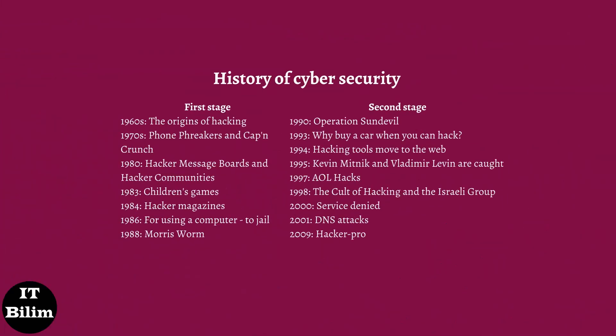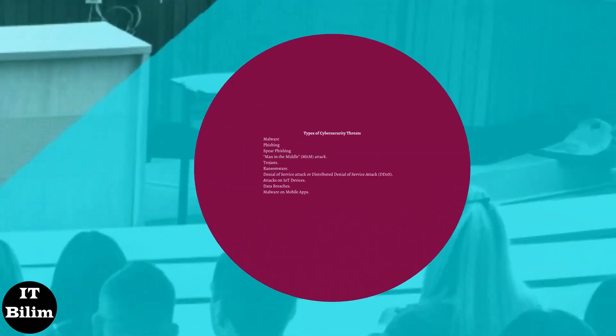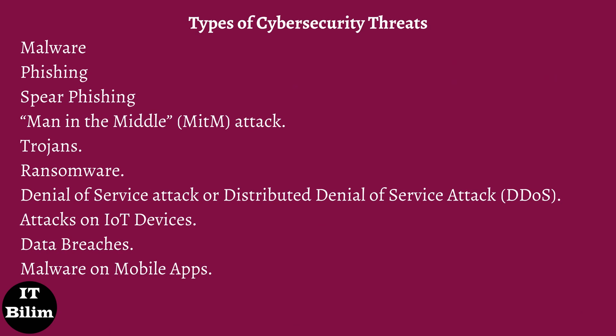History of cybersecurity. There are ten common types of cyber threats. Malware: software that performs a malicious task on a target device or network, such as corrupting data or taking over a system. Phishing: an email-borne attack that involves tricking the email recipient into disclosing confidential information or downloading malware by clicking on a hyperlink in the message. Spear phishing: a more sophisticated form of phishing where the attacker learns about the victim and impersonates someone he or she knows and trusts. Man-in-the-middle (MITM): an attacker establishes a position between the sender and recipient of electronic messages and intercepts them, perhaps changing them in transit — the sender and recipient believe they are communicating directly. A MITM attack might be used in the military to confuse an enemy.